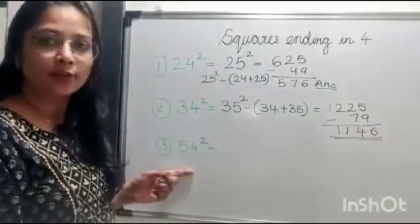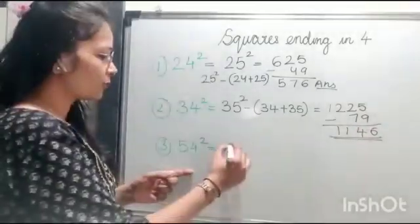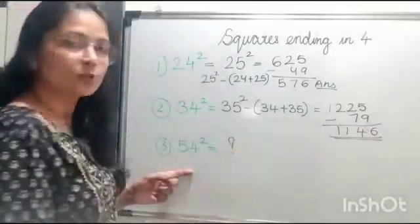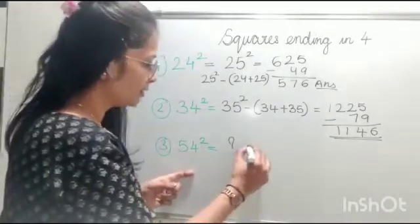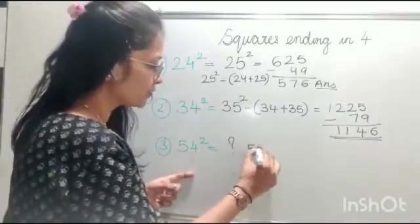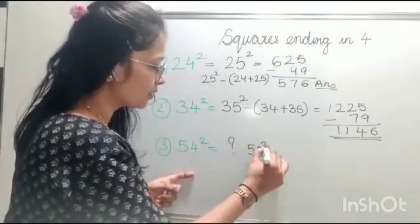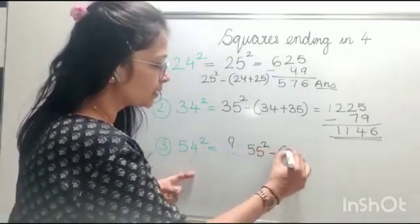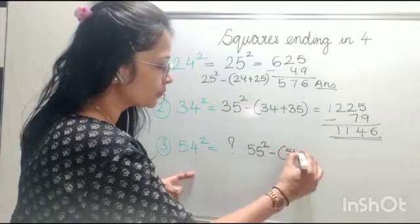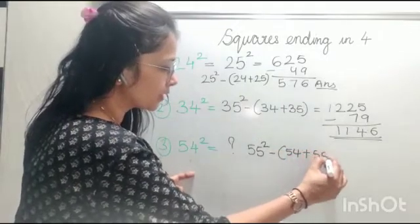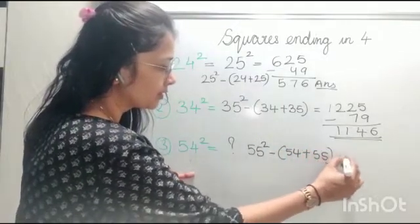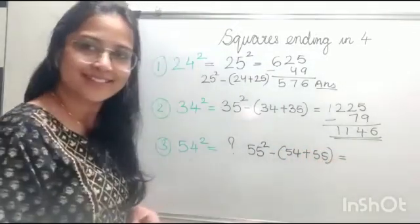Now can you find the square of 54 using the same trick? I'll put the formula for you all. So that's 55 squared minus (54 plus 55), which is 55 squared minus 109. Here's your answer.